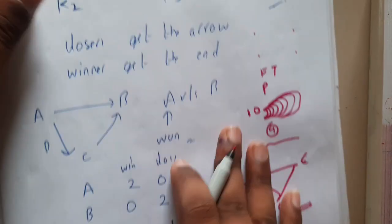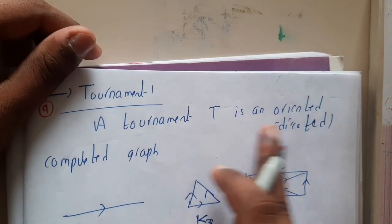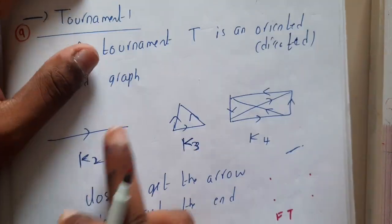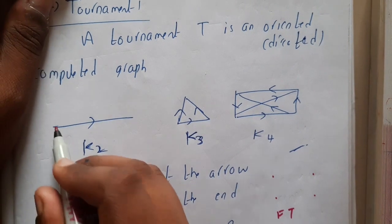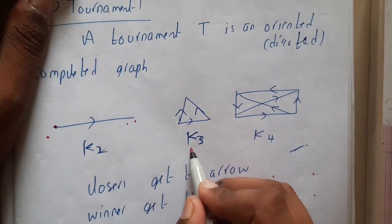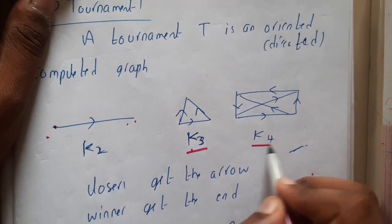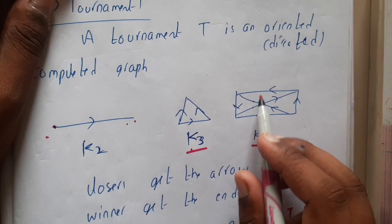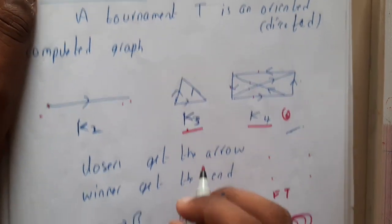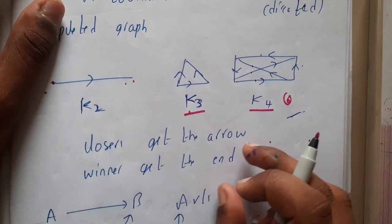A tournament T is a directed complete graph. Here we have K2, so in between two points there will be only one edge. In between K3 will be having three. In between K4 we are having one, two, three, four, five, six edges in this way.